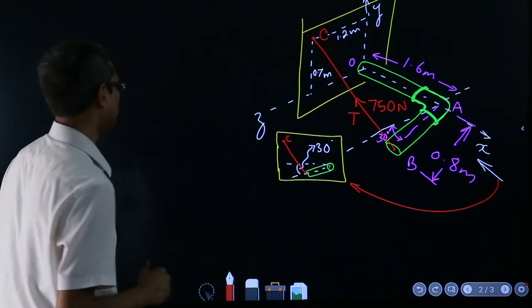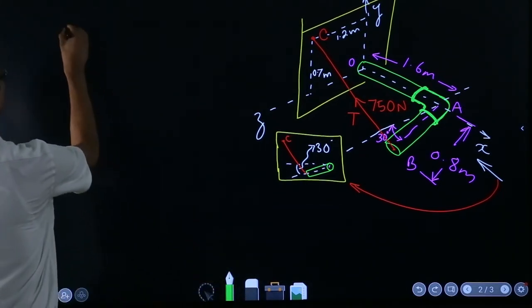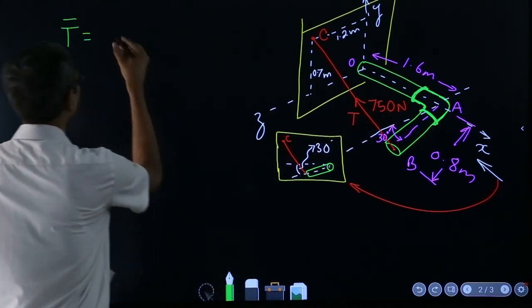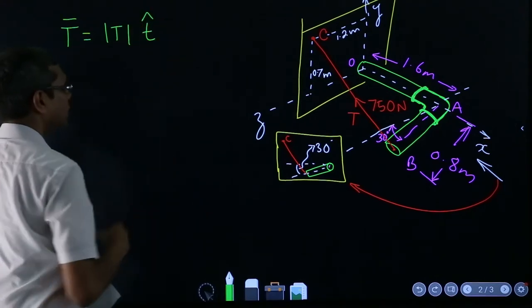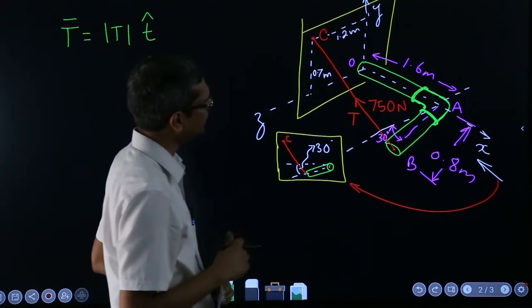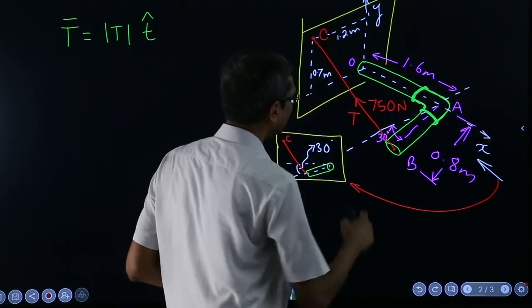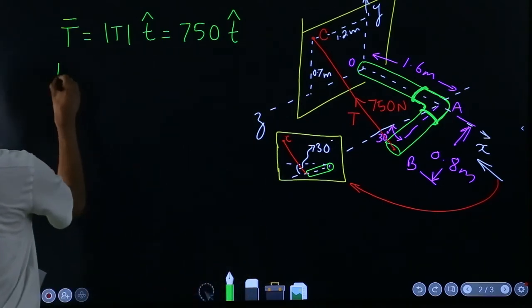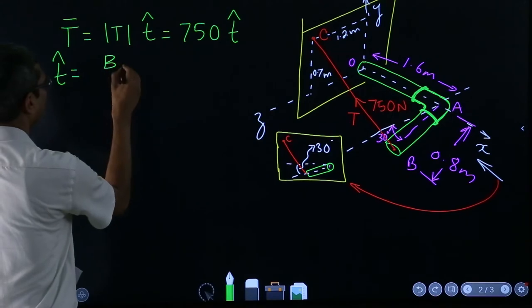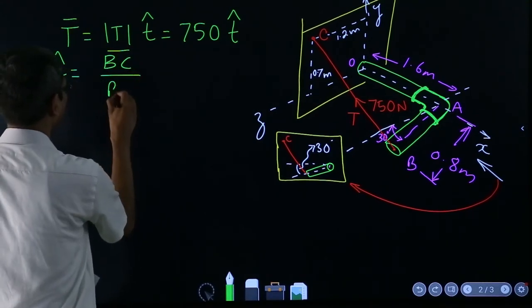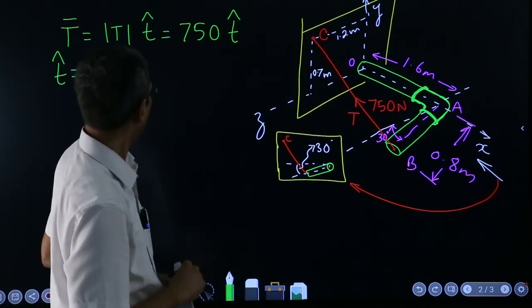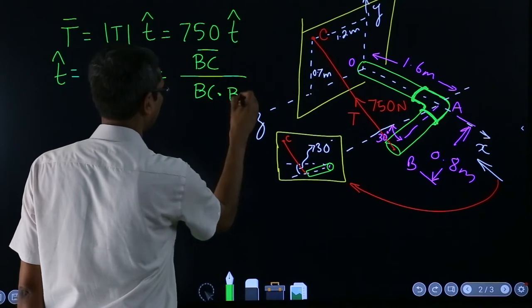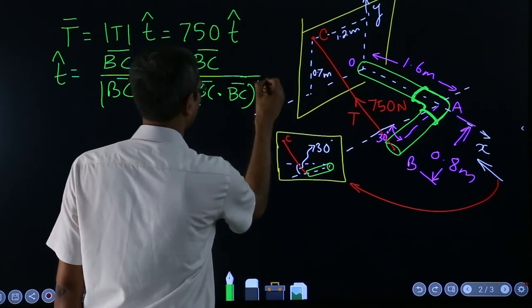For that, what we need to do is represent T as a unit vector form. The magnitude is known, that means T magnitude is known, and we just have to find out the t-hat, the unit vector. The unit vector for this direction we can calculate. T-hat we can write as BC arrow divided by the length of BC, that vector. That means BC vector divided by the square root of BC dotted with BC.